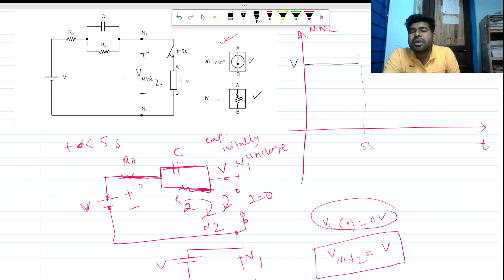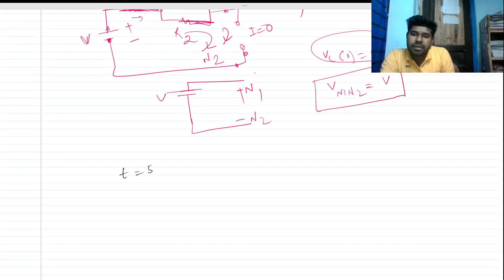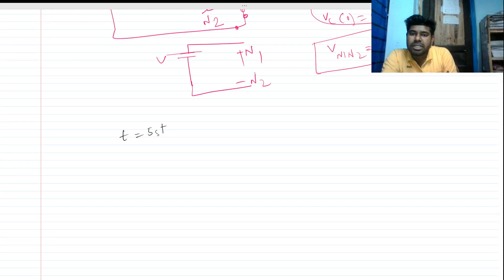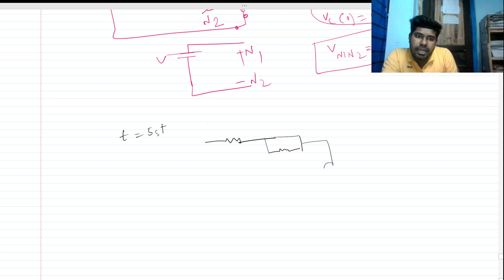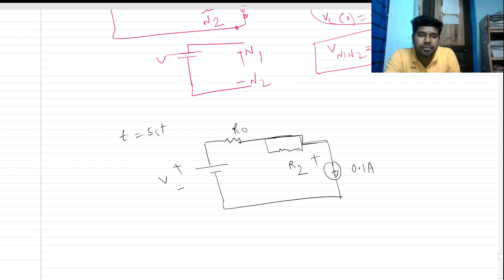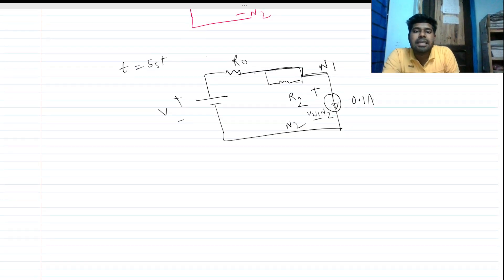Now we check at t equals 5 seconds plus — just after the switch is closed. At infinite frequency the capacitor becomes short-circuited. So the capacitor is shorted, and the equivalent circuit has a finite current of 0.1 amps and a voltage V. This gives us R_naught and R2, but R2 is out of the picture because across R2 there is a short-circuited path.